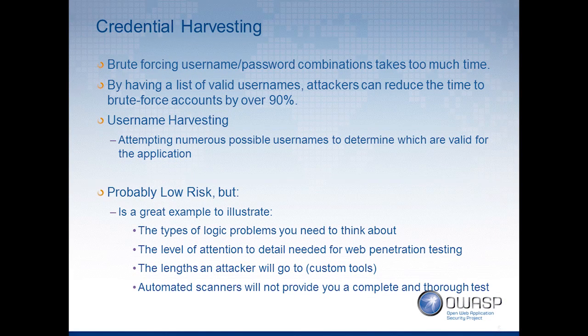It might be an email address, first initial last name, whatever the makeup is — we want to know the criteria for user IDs, what makes them up, roughly how many you have, and ultimately we'd like to have all of them. If you're a state agency that publishes every employee's email address and the login ID is that email address, this is probably an informational finding. But if you're Ashley Madison, it's probably going to be high risk. It all depends on who you are and the nature of the system.